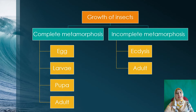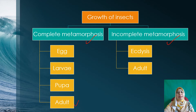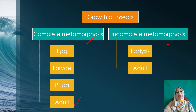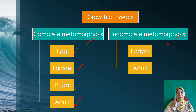The growth of insects can be divided into two types: complete metamorphosis or incomplete metamorphosis. For complete metamorphosis, before the insect becomes an adult, it has to undergo three stages. The first is egg, which becomes larvae; larvae later become pupa; and finally, pupa develops into adult.